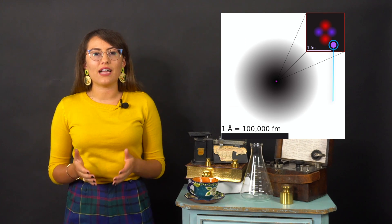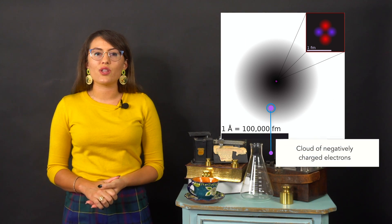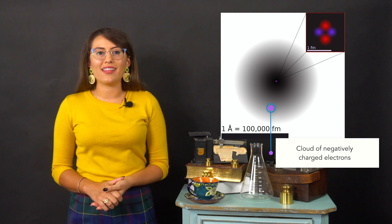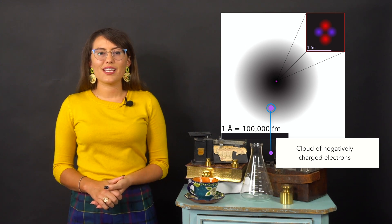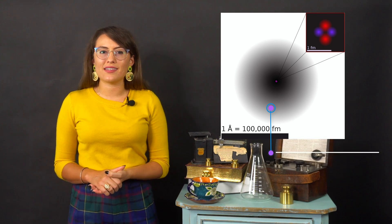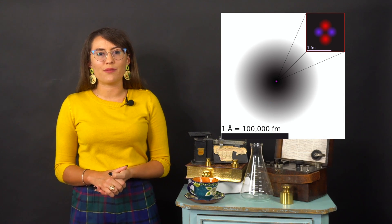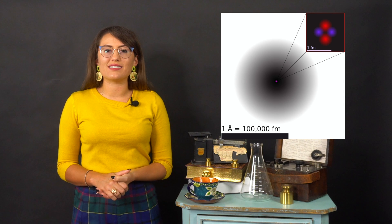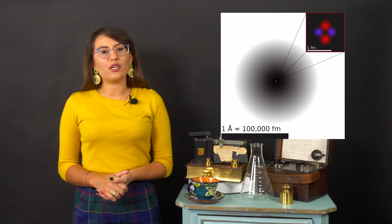The nucleus is surrounded by a cloud of negatively charged electrons, which have much less mass than protons and neutrons. Protons and electrons have equal magnitude of charges, but opposite signs, and a neutral atom will have the same number of protons and electrons, resulting in a neutral charge.